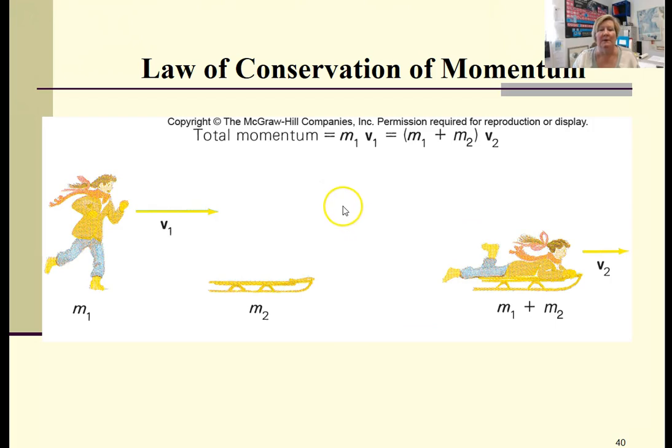Let's take a look at conservation of momentum. Here we have interacting objects. Here we have a person that has a certain mass, we'll call m1, running at a certain velocity v1, and we have a stationary sled with a mass of m2. If we wanted to calculate the momentum, we would simply calculate the person's mass times the velocity, m times v.